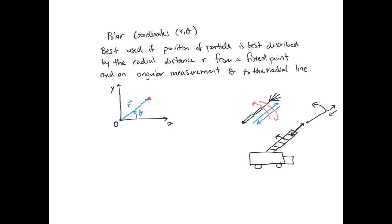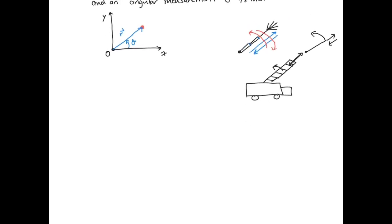Typically students don't love polar coordinates because they're a little less intuitive, but the math is actually more straightforward than some other problems we've done. In n-t coordinates the origin was moving with the particle; in x-y coordinates the origin was fixed. Here we're going back to a fixed origin, so you do have a fixed point.